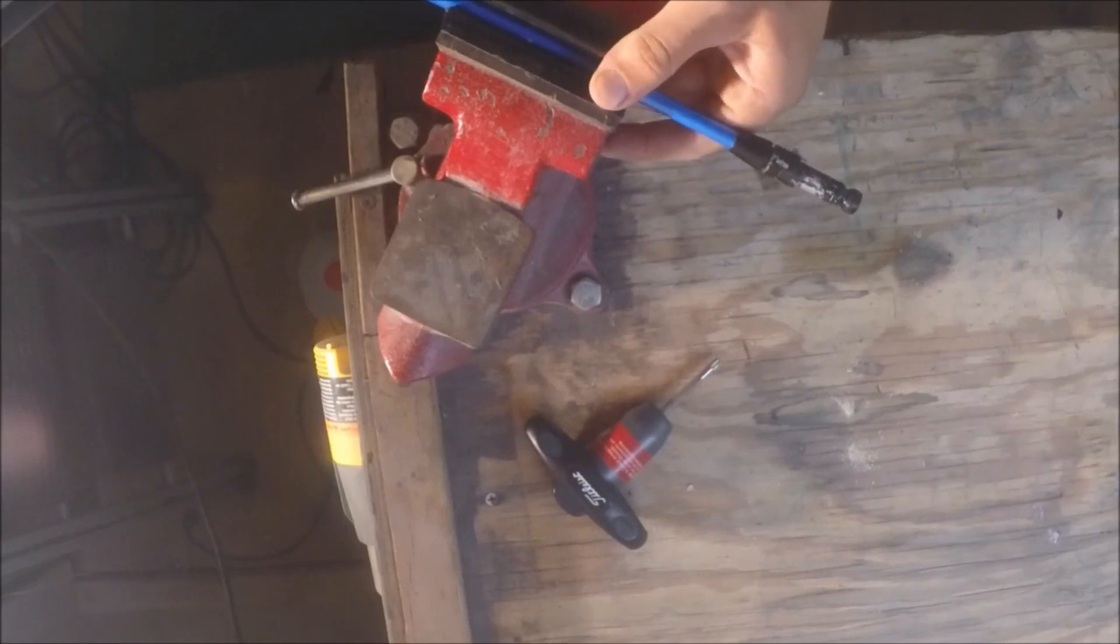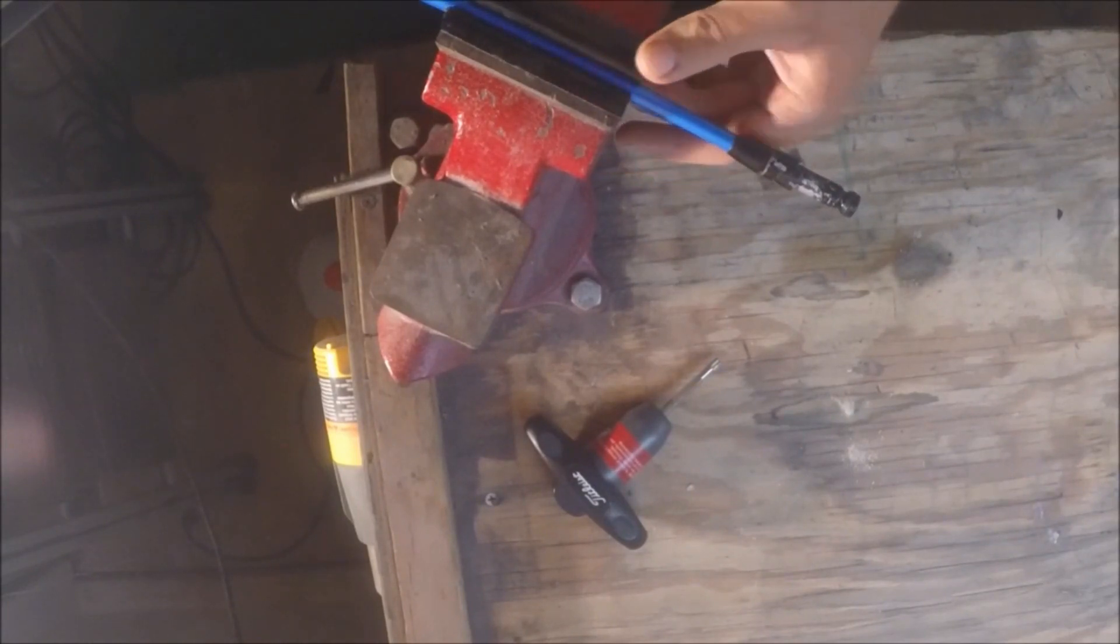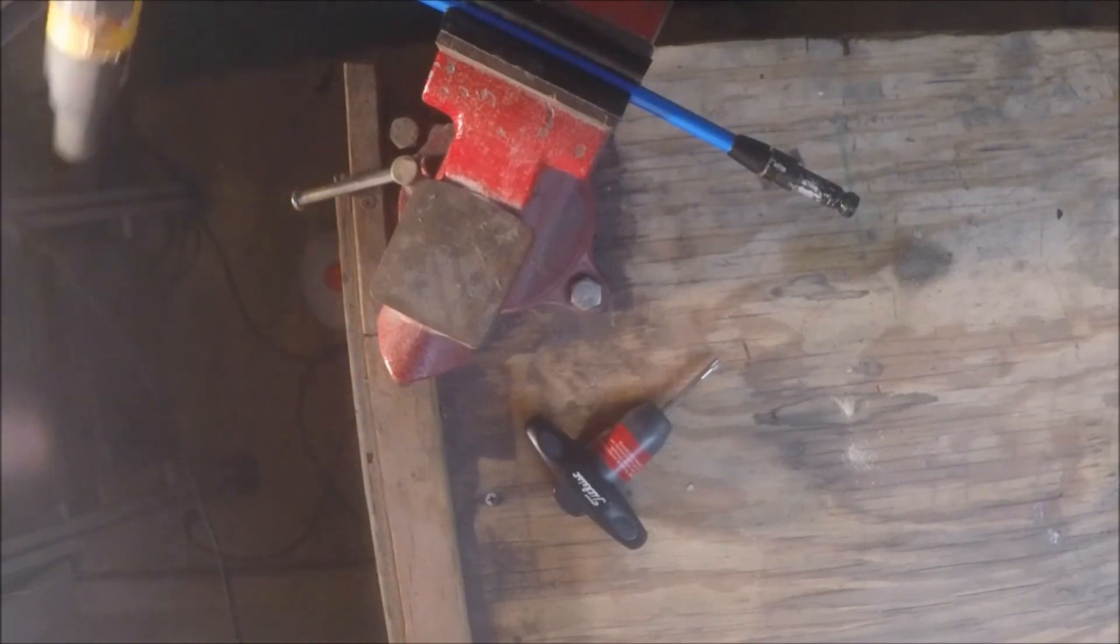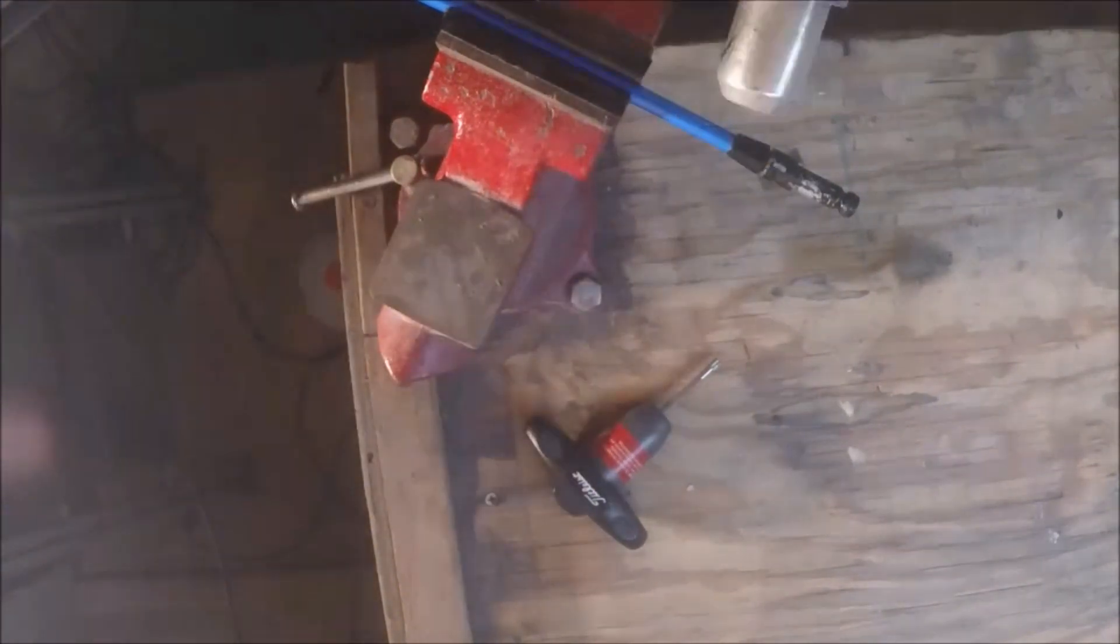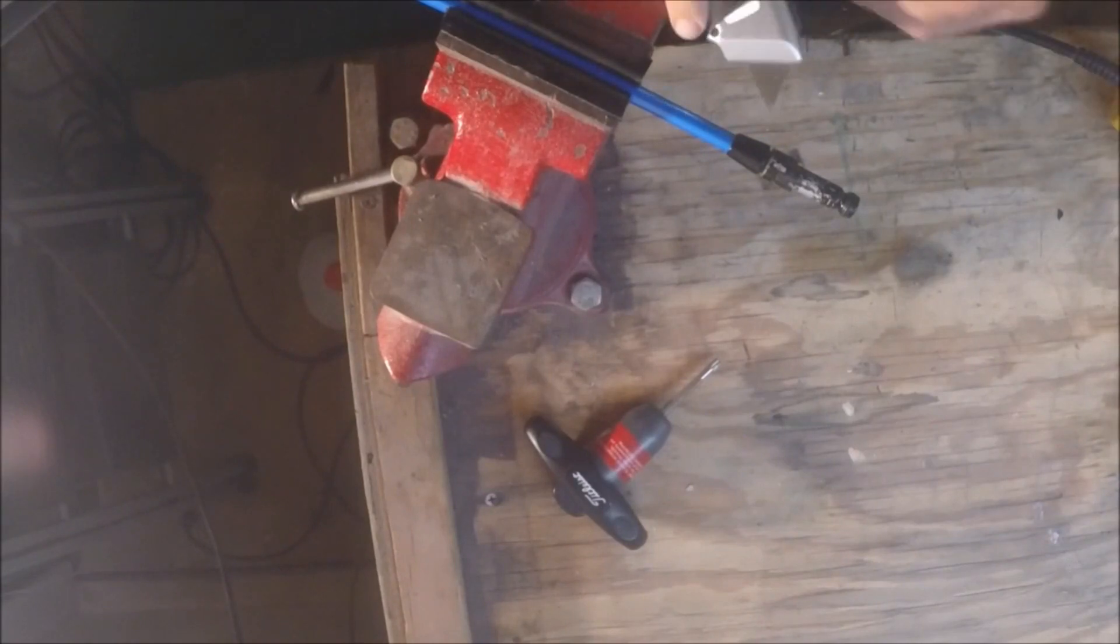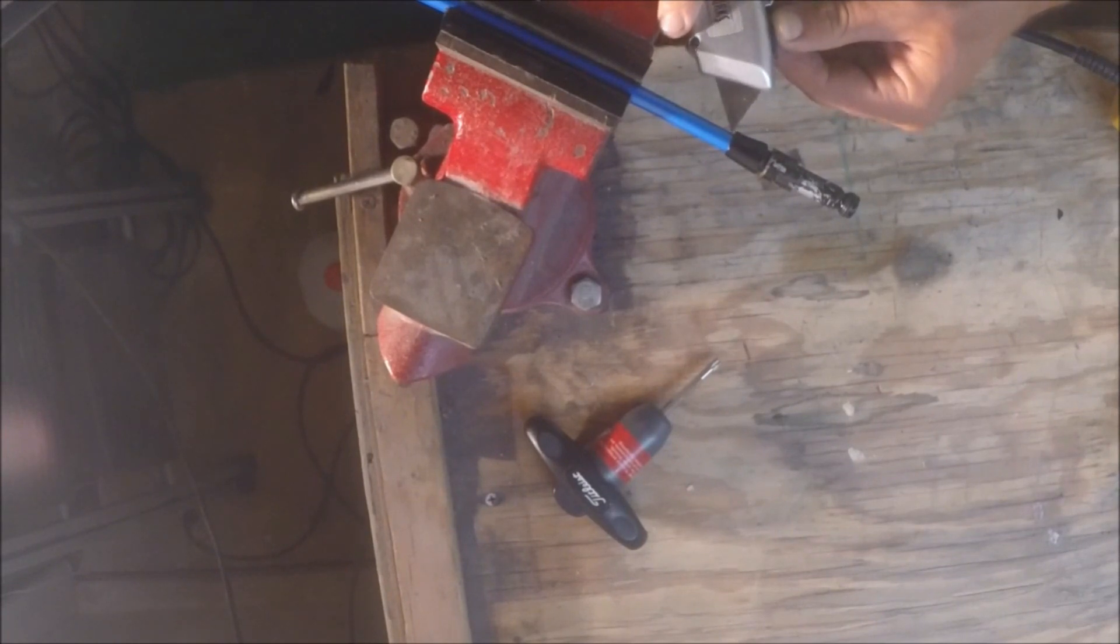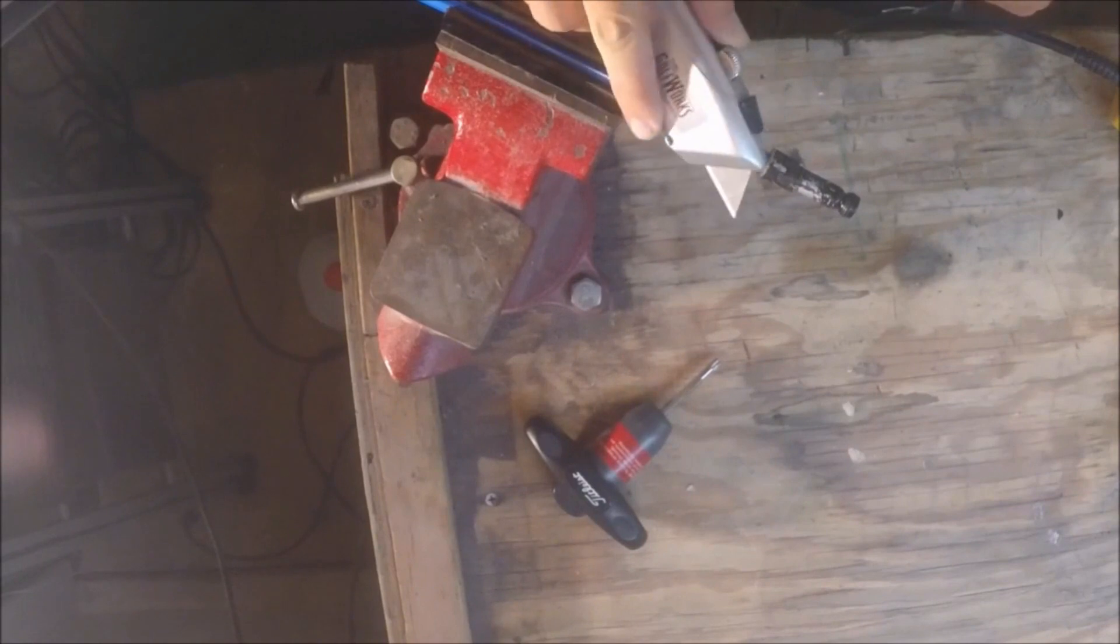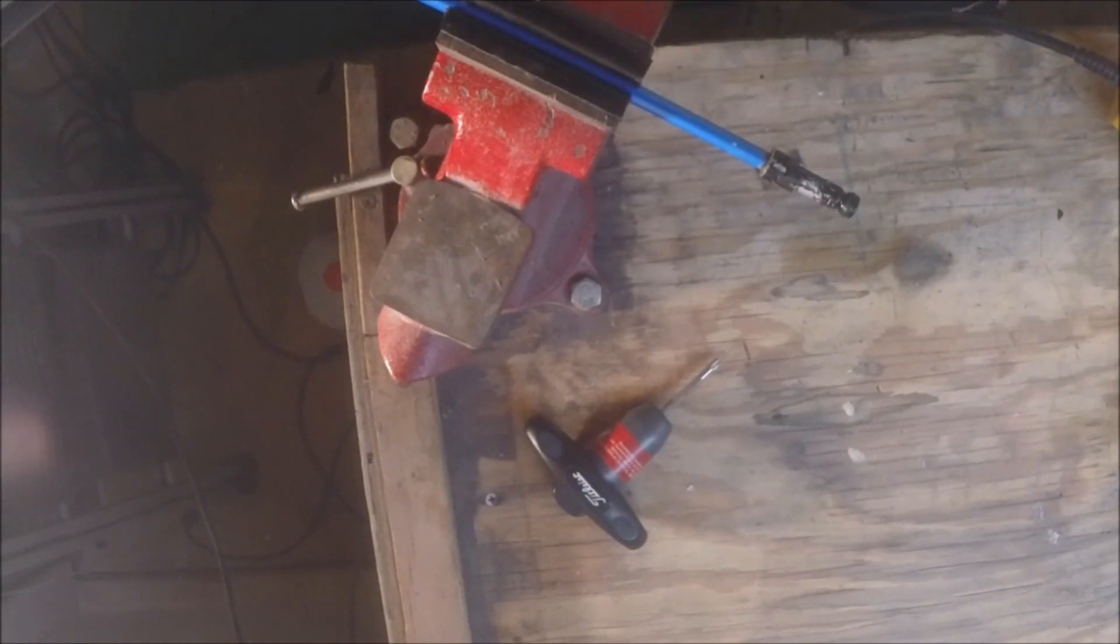I'm going to put it in the clamp here and the vise. Get my heat gun. Now take my knife, gently make a slit through here, being sure not to cut the shaft. And that just popped off real nicely.